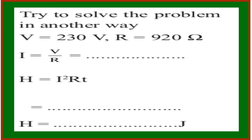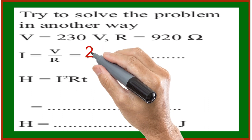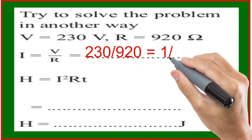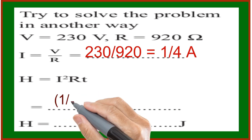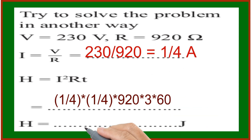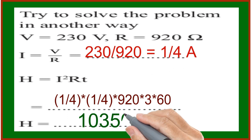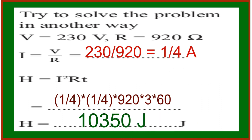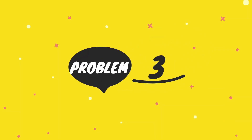If i equals V by R, that is 230 divided by 920, that is 1/4 A. Now substituting into H = I²RT: that is also 15,350 J. H equals I²R. I equals V/R. V/R into R equals I²R.